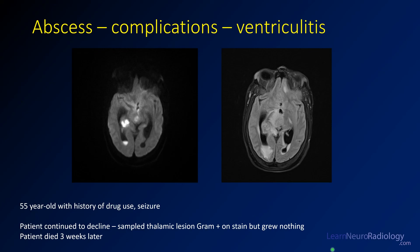Ventriculitis is a very severe condition. This patient continued to decline. Sampling of the thalamic lesion in the OR yielded gram-positive bacteria, and the patient ultimately passed away from this condition.